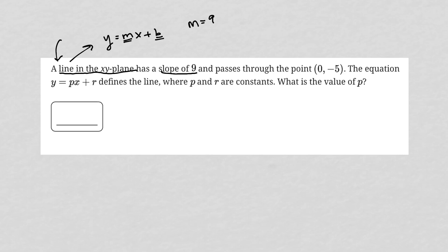And it says it passes through the point (0, -5), which means that my y-intercept is negative 5 because the y-intercept is found wherever x is equal to 0, right? So x is equal to 0 here, which means this y value of negative 5 is actually my y-intercept.